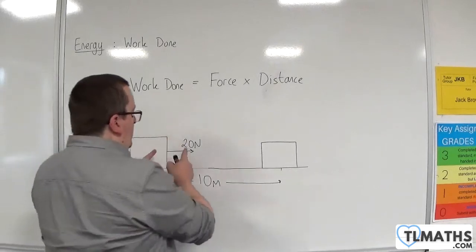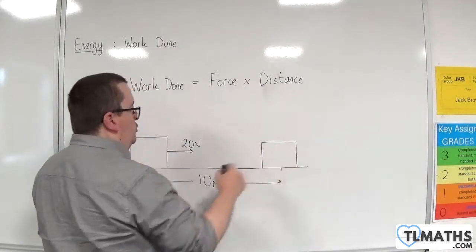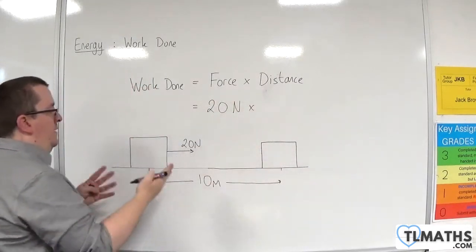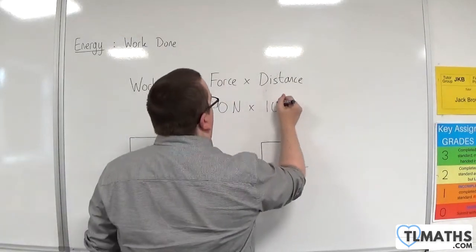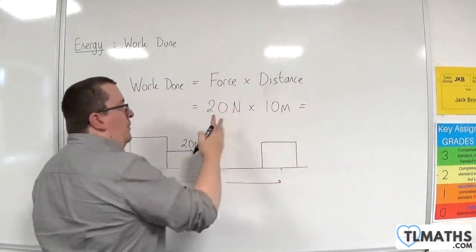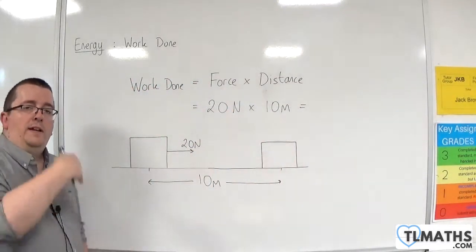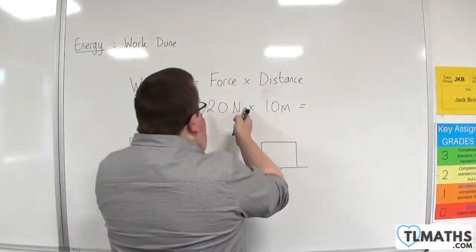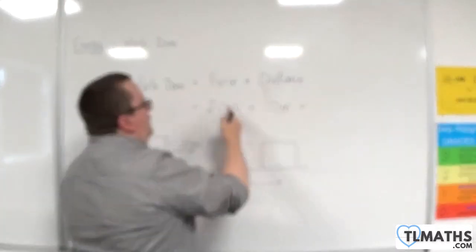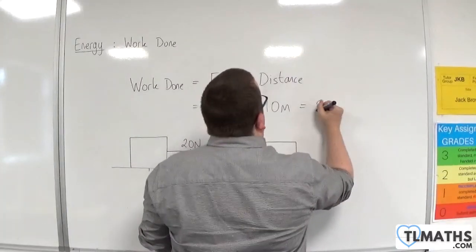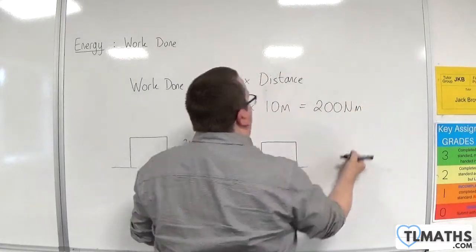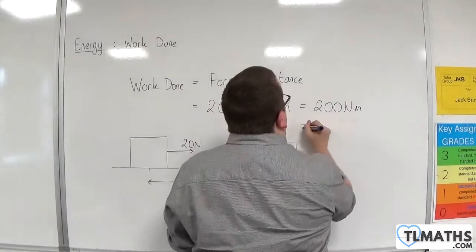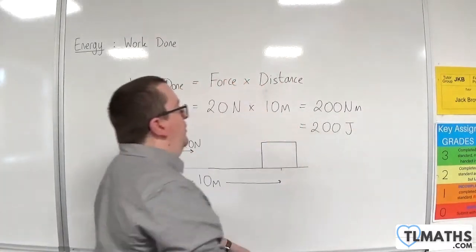Well, it is the 20 newton force — that is the direction of motion — times by the distance, 10 metres. And we've seen it before: I introduced it with mgh, which was weight times height, which is a force times a distance. So we would have 200 newton metres, which we know is joules.